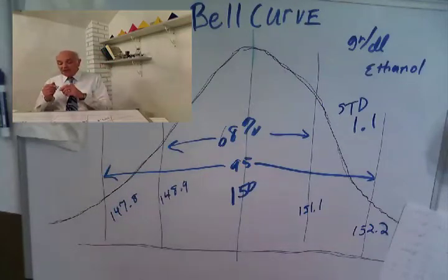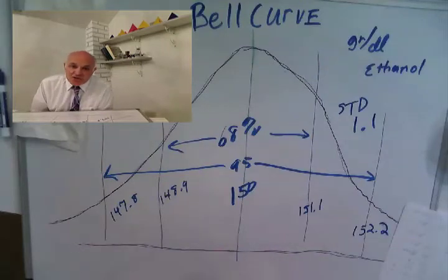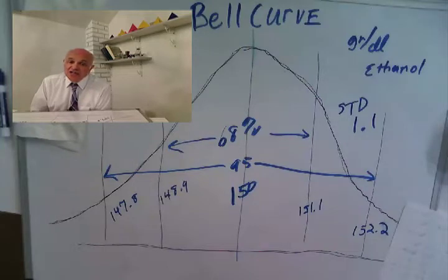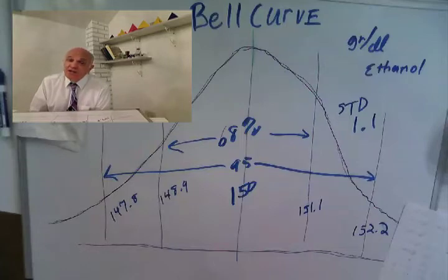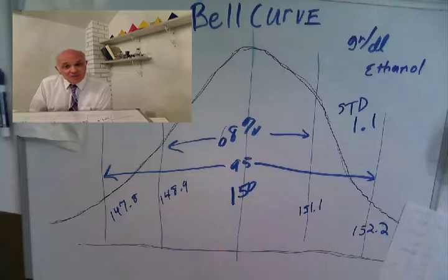What would happen if they had run it at 130 instead of 150? The assumption made is that the standard deviation is independent of the quantitation. In other words, whether you run it at 150, 120, or 100, the standard deviation would still be 1.1.